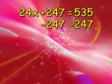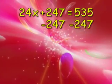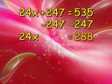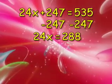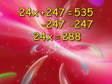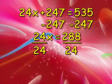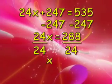We often call equations like this multi-step equations, because there are many numbers attached to many operations that we have to eliminate to isolate the X. As a general rule of thumb, we start with the number that is either added or subtracted. We'll subtract 247 from both sides of the equation, which eliminates the plus 247, and leaves us with 24x equals 288. Finish off this basic one-step equation by dividing both sides by 24, because that's the opposite operation of multiplication, and X equals 12.